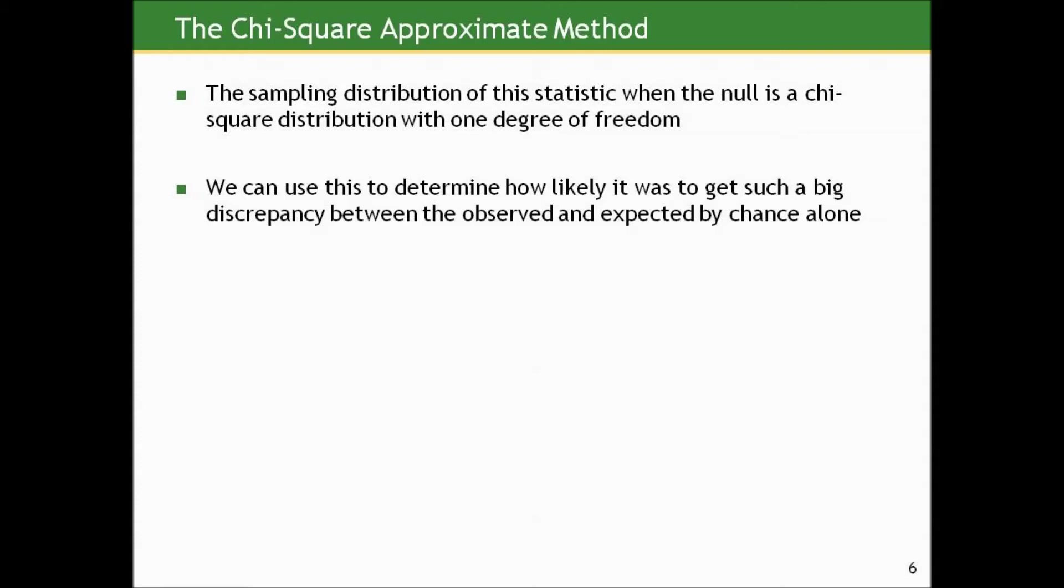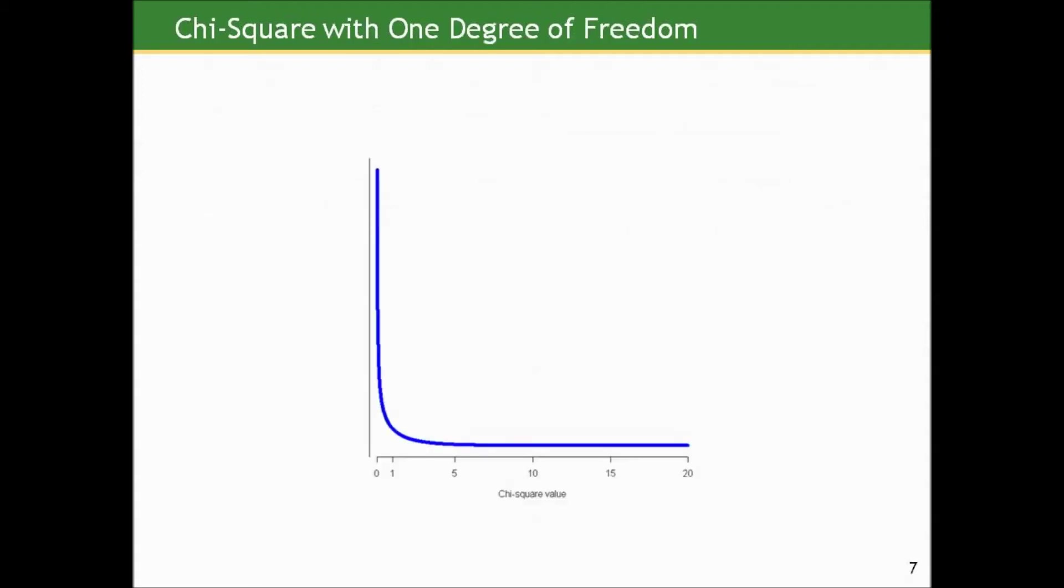It turns out the sampling distribution of this statistic is related to a normal distribution, but it's slightly different than ones we've seen before. It's called a chi-square distribution with one degree of freedom. We can use this distribution to determine how likely it would be to get such a big discrepancy between what we saw on our two-by-two table versus what we were expected if the null were true, how likely it would be to get that under random sampling if the null were true. Here's a picture of what the chi-square curve looks like. It's heavily right skewed. Unlike the normal, it's not bell-shaped and symmetric. But the idea is the same. We find out where we are under that curve relative to the rest of the points and characterize our result as extreme or not extreme based on the proportion of results we could have gotten that are as far away or farther.